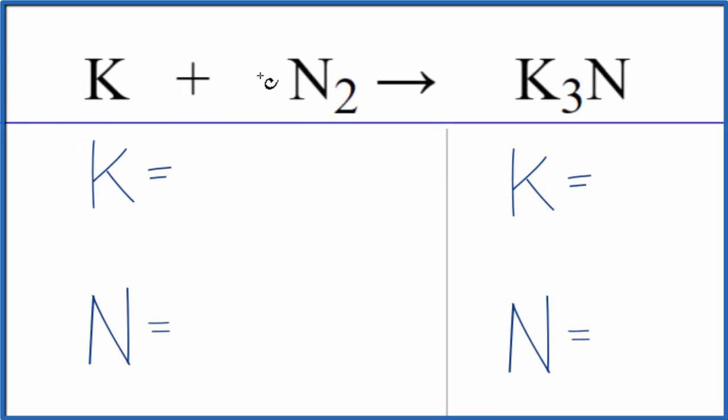In this equation we have K plus N2 and it's giving us this K3N. This is potassium plus nitrogen gas. So to balance the equation, let's count the atoms up on each side.